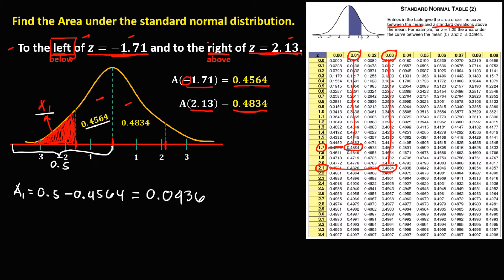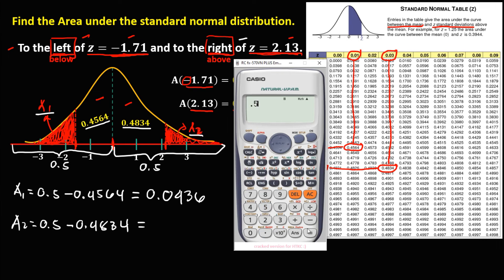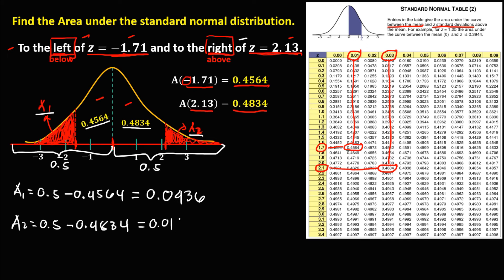For the area of Z equals positive 2.13, since it's to the right, this is the shaded region — the area we need to find. We call this Area 2. Since it's to the right, that's 0.5 because half of the curve has area 0.5. Since the middle area is not part of the shaded region, we subtract 0.4834. So Area 2 equals 0.5 minus 0.4834, which equals 0.0166.